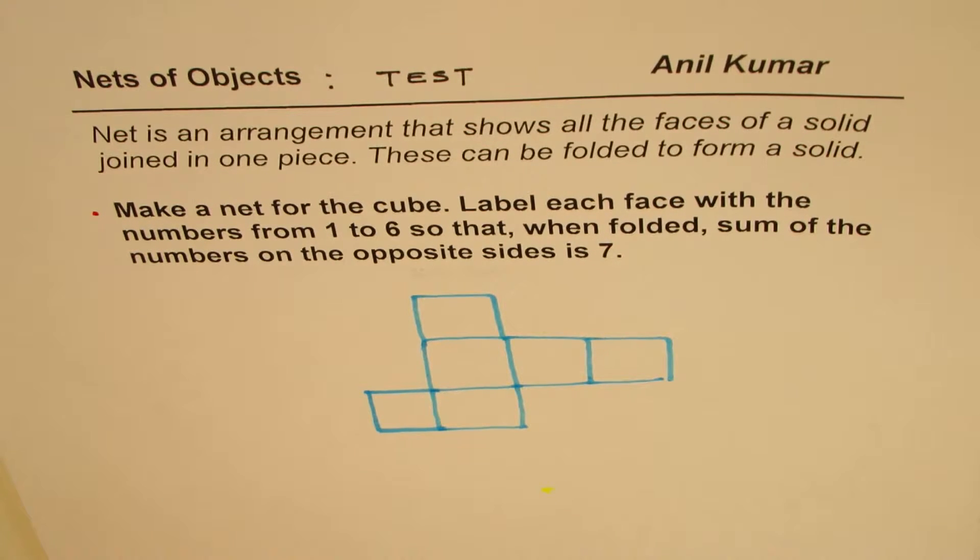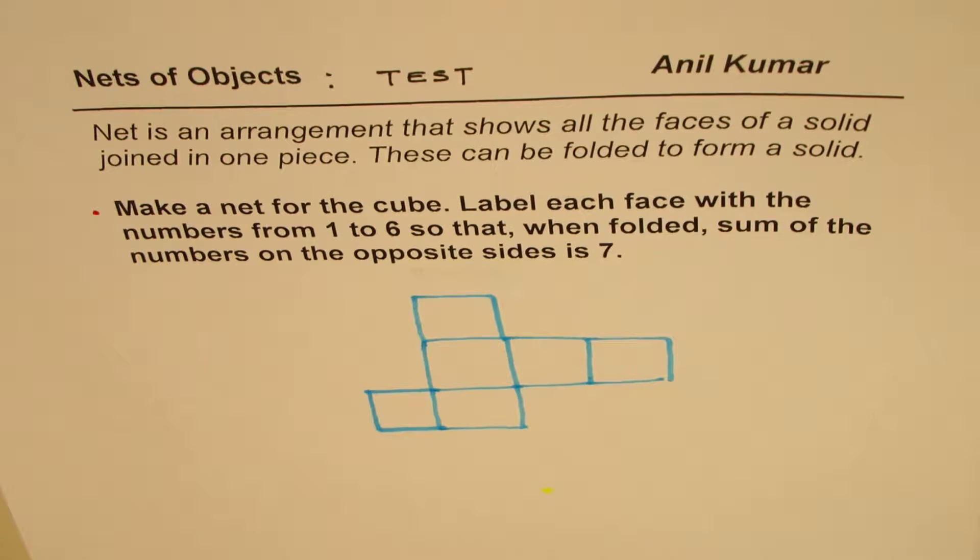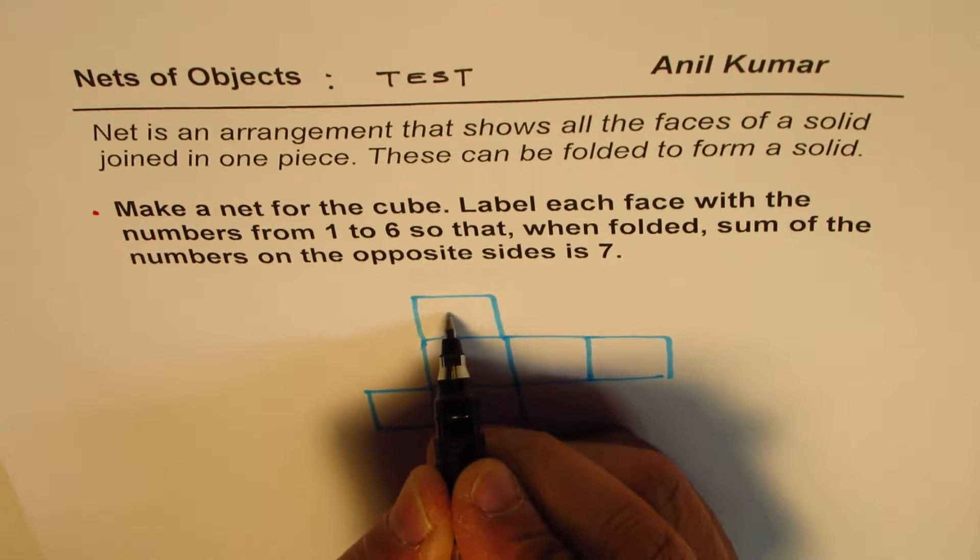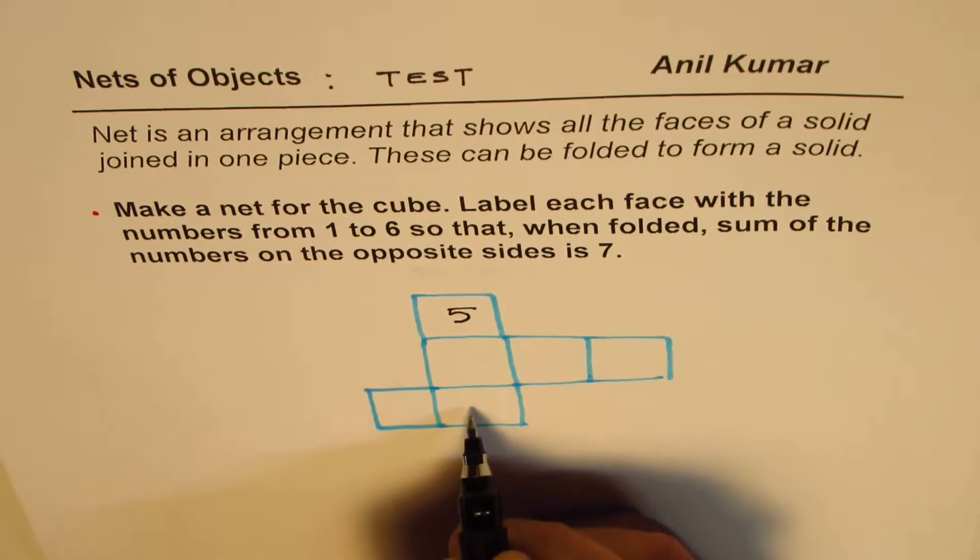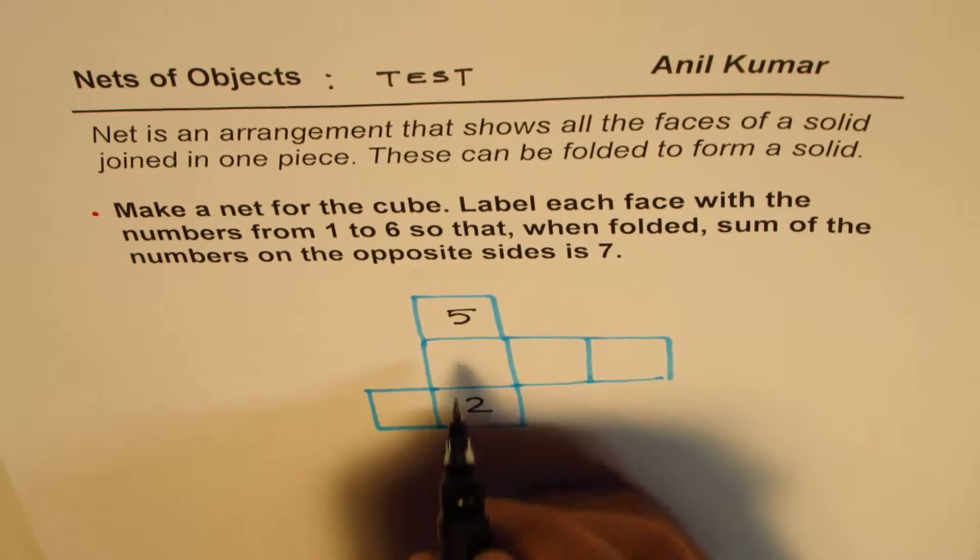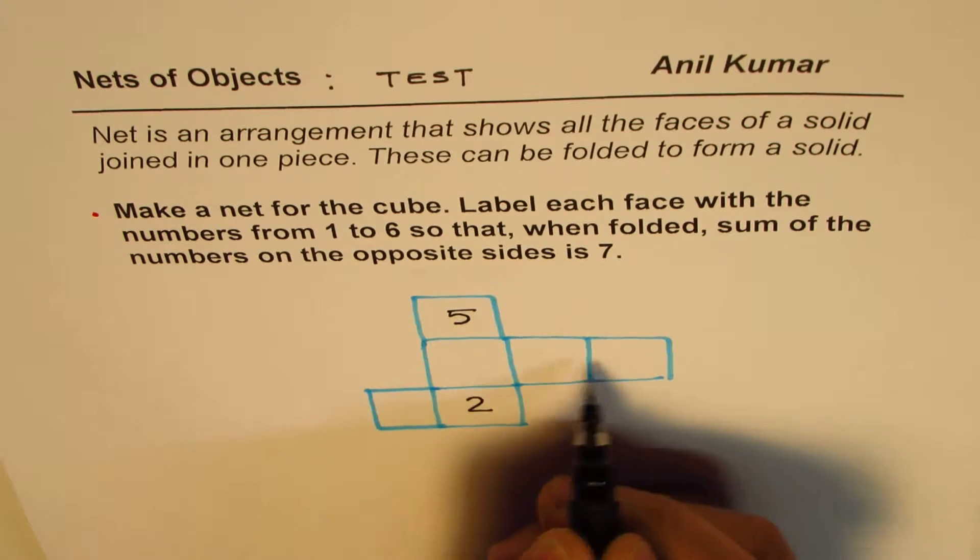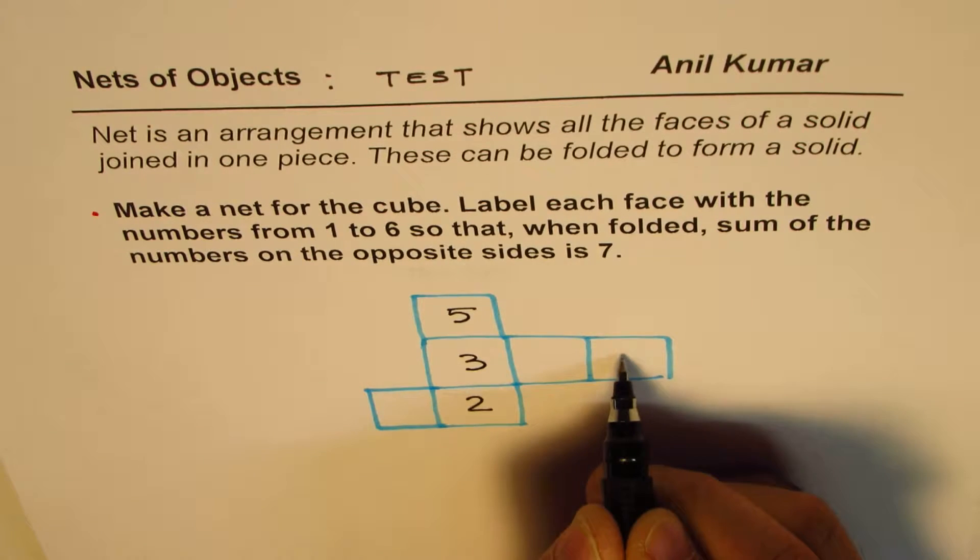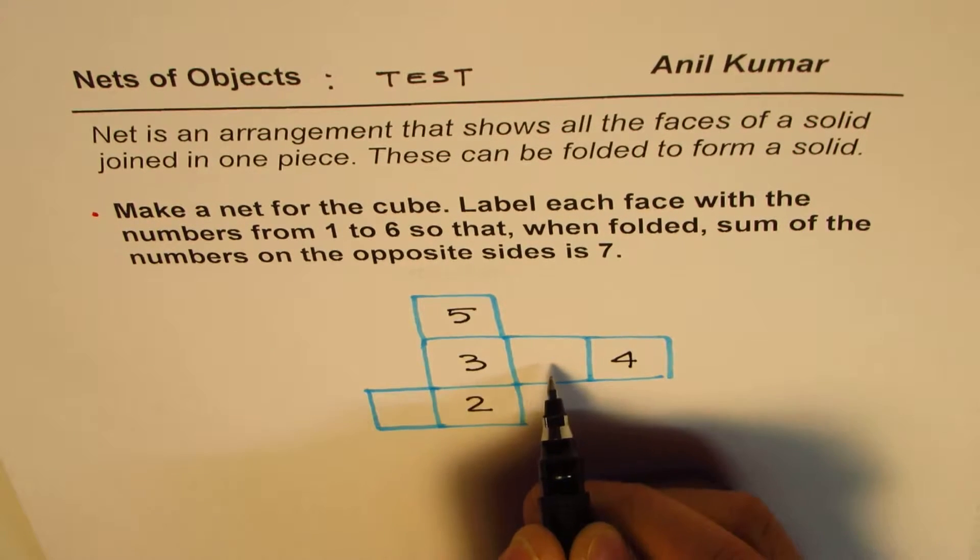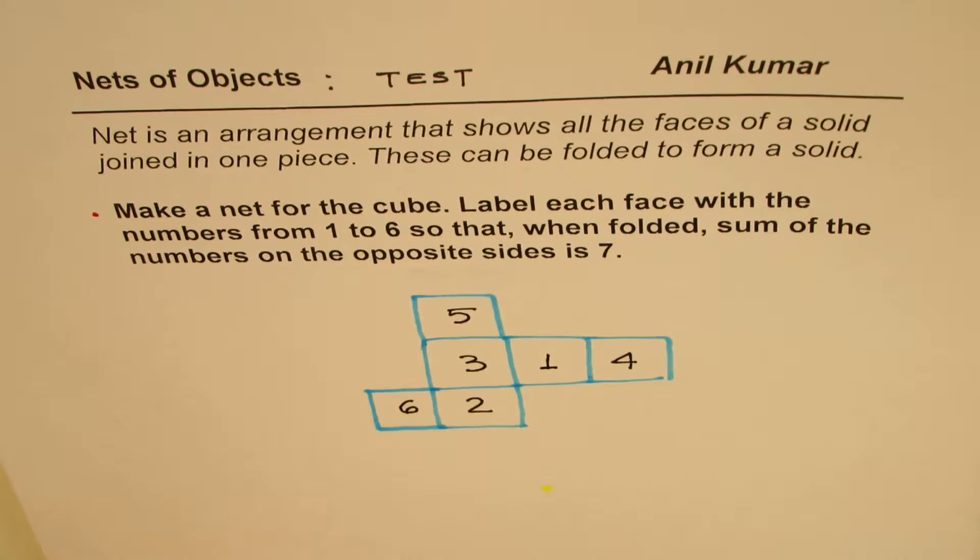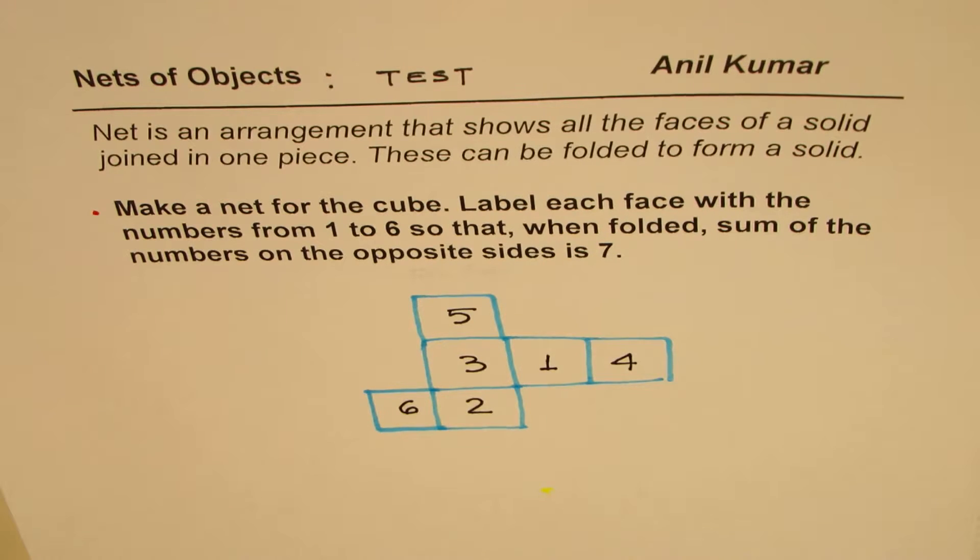Now the question is how to number so that the opposite sides get addition of 7. Let's say if I write 5 here, then opposite to 5 is this side that should come to 2 so that we get 7. If I take this center, then this is the side that comes on top. If I make this 3, then that should be 4, and we're left with two places so I could write 6 and 1.